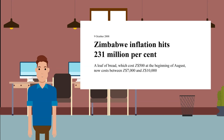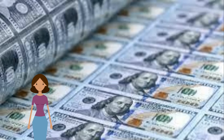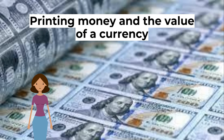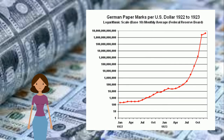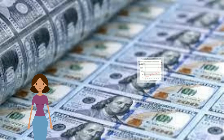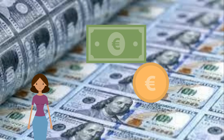Hyperinflation also occurred in Zimbabwe in the 2000s. How does the printing of money affect the value of a currency? If a country prints money and creates inflation, there will be a decline in the value of the currency. Suppose inflation in Germany is 100% and inflation in the USA is 0% — this means German prices are doubling compared to the USA. You will need twice as much German currency to buy the same quantity of goods. The purchasing power of the German currency is declining, and therefore the value of the mark will fall on exchange rates. In a period of hyperinflation, investors will try to buy a stable foreign currency because it will hold its value much better.